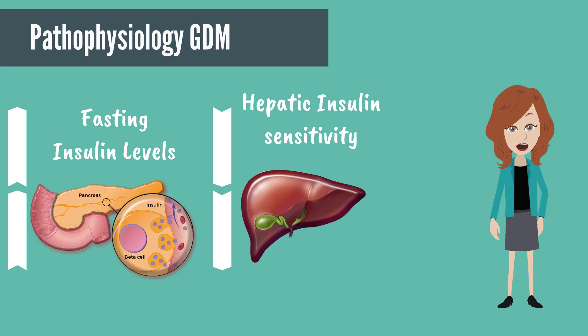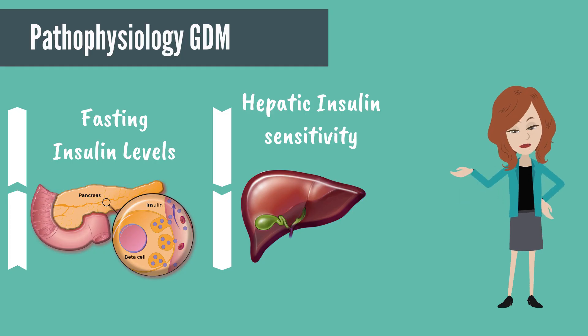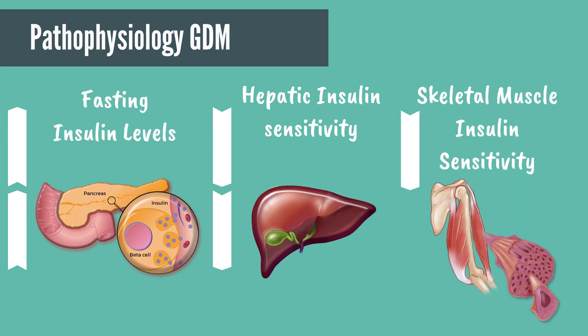The normal insulin resistance in pregnancy is further exaggerated in GDM, leading to even higher fasting insulin levels and further decrease in hepatic insulin sensitivity, resulting in higher serum glucose levels. This may be in part related to higher HPL levels. Additionally, there is decreased insulin sensitivity in skeletal muscle — a defect in the signaling cascade decreases the ability of the insulin receptor beta subunit to undergo tyrosine phosphorylation, resulting in a 25% lower uptake of serum glucose.